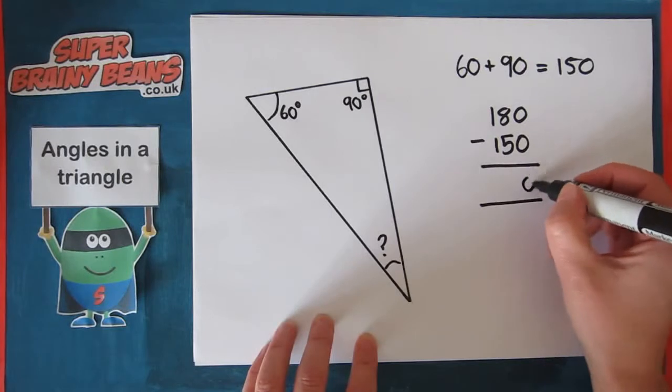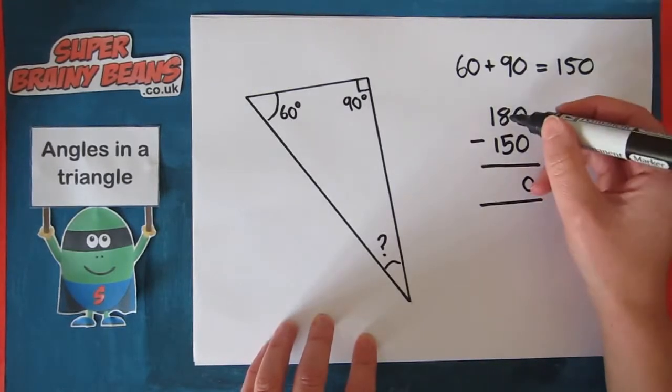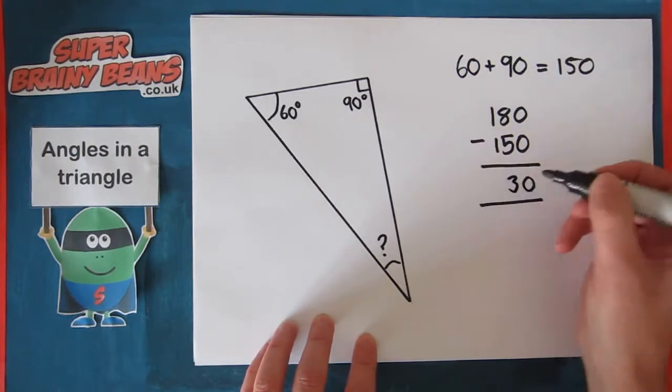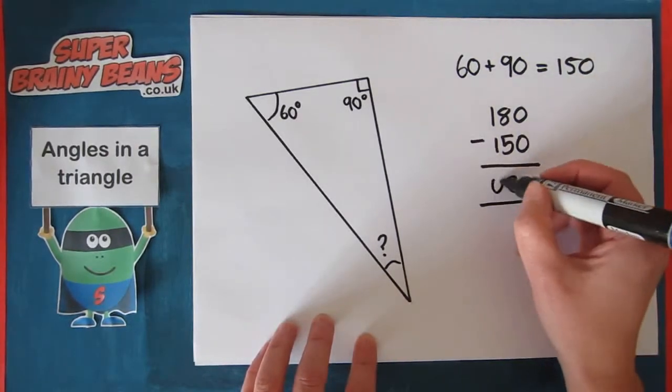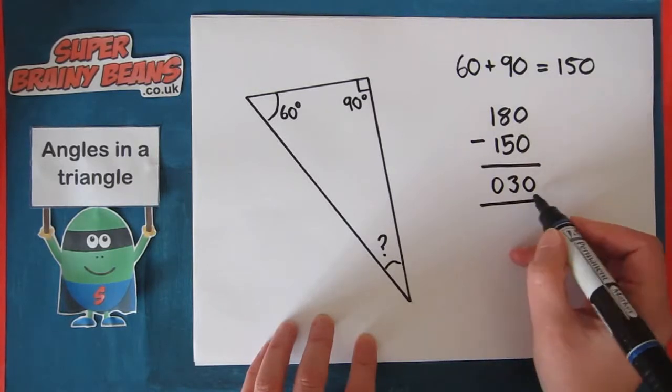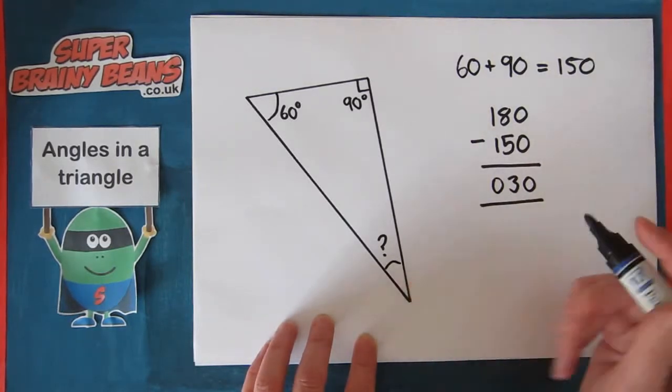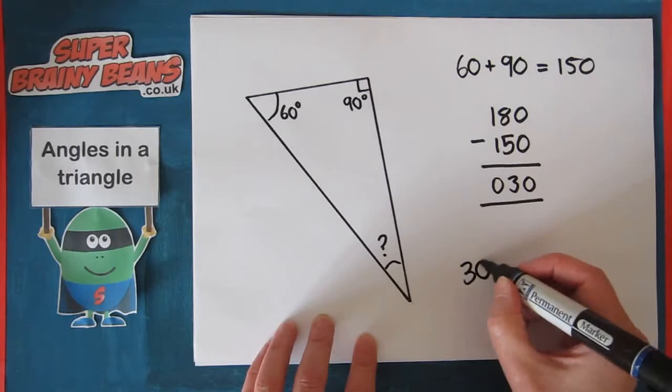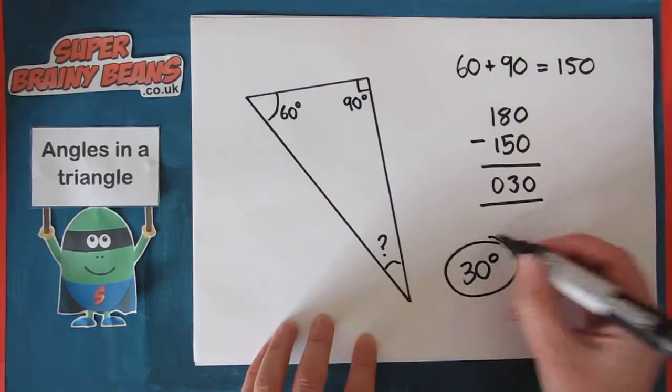Zero and zero, zero. Five away from eight is three. One away from one is zero as well. So the answer is 30. This angle is 30 degrees.